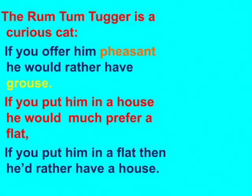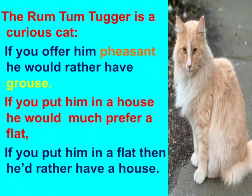And if you put him in a house, he would much prefer a flat. If you put him in a flat, then he would rather have a house. Again, he wants the opposite of what is given to him. If he is kept in a house, he wants to go to a flat. And if he is kept in a flat, then he wants to go to a house — wants the opposite of whatever is provided to him. This is the Rum Tum Tugger, a curious cat.